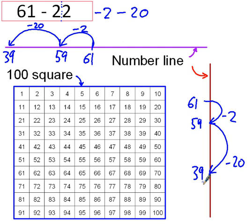And on a 100 grid, if you prefer, there's 61, take away 2, take away 1, take away 2, that's 59. And then take away 20, take away 10, take away 20 is 39. And you can see, as I'm doing it, I'm actually touching the 100 square. Or, when I'm using the number line, I'm physically moving my pencil over the page to try and represent the movement. And again, that's something that really helps me picture what's going on.